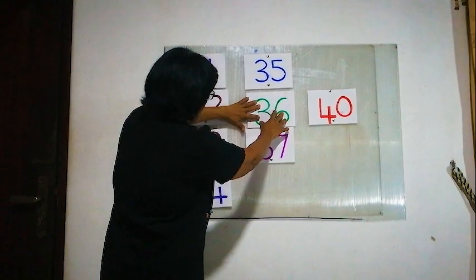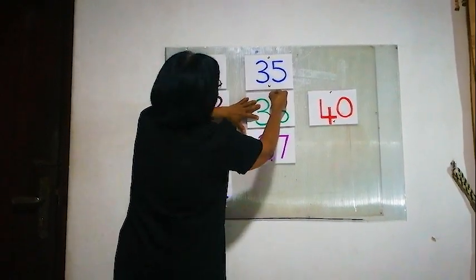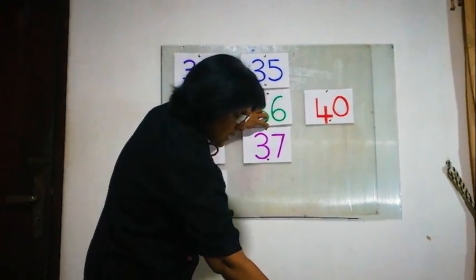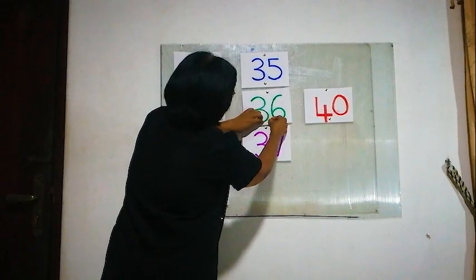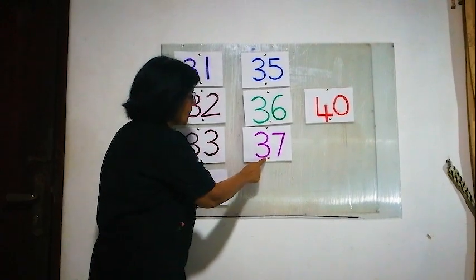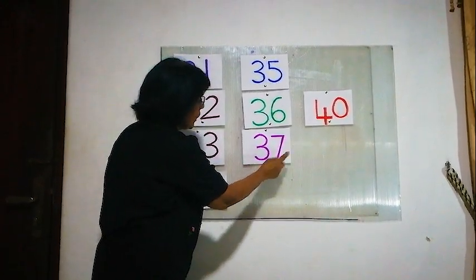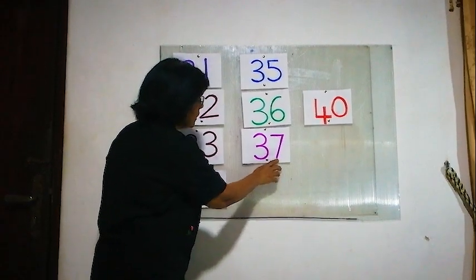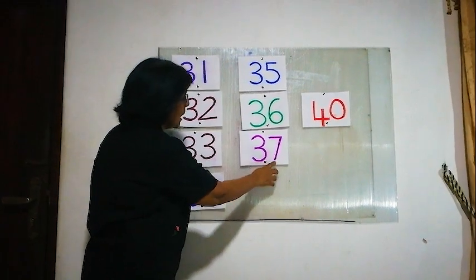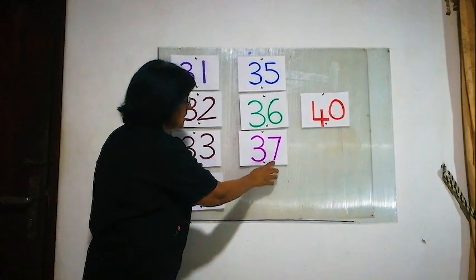Is this number correct? Yes, this is 36. 35, 36. Here, the next number after 36 is 37. Now here the missing number is 38. 37 is here, 38 must come here.